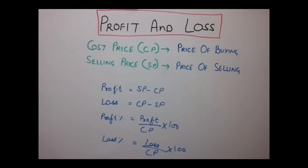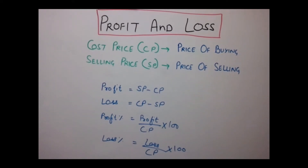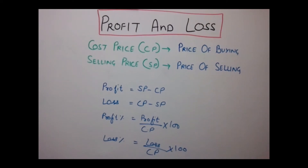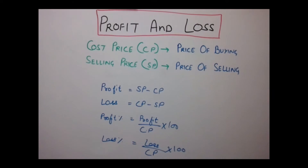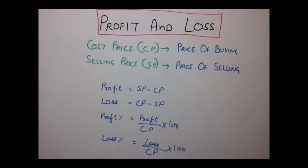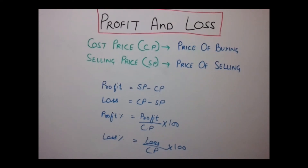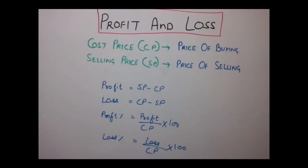For example, if you are going to a shop to buy a chocolate for Rs.60, then that Rs.60 is the Cost Price for you. Whereas that Rs.60 is the Selling Price for the shopkeeper, because he is selling the chocolate and you are buying it.